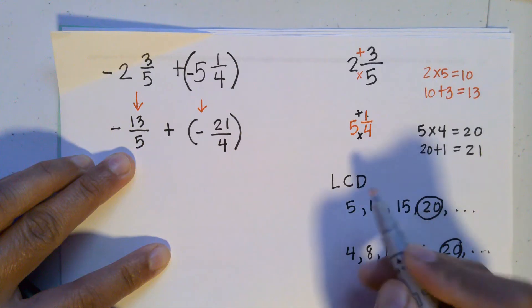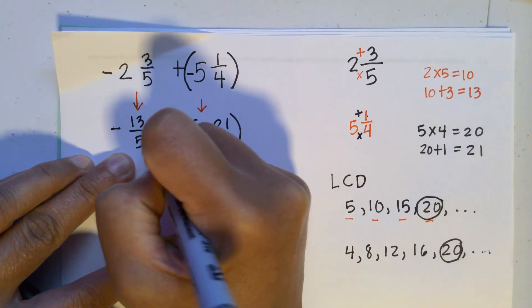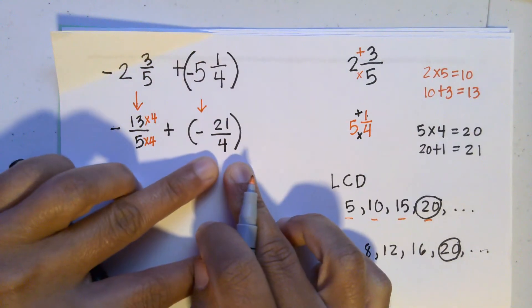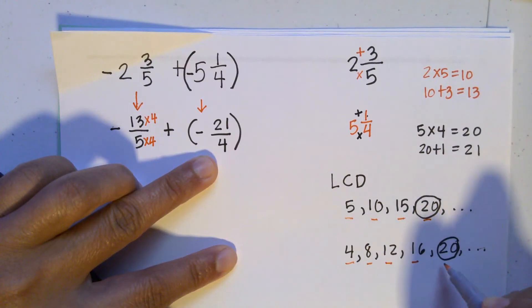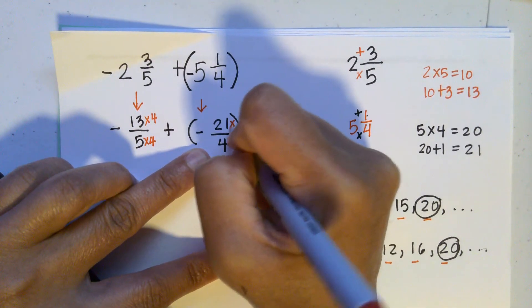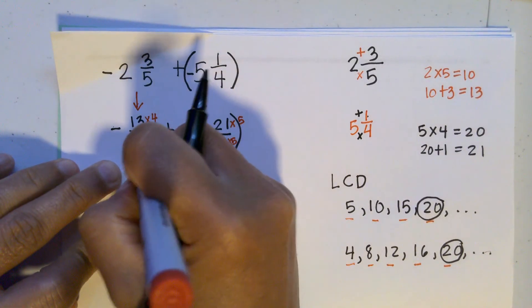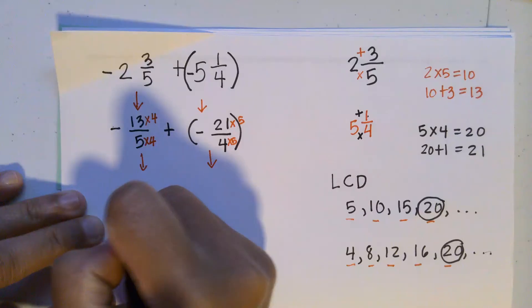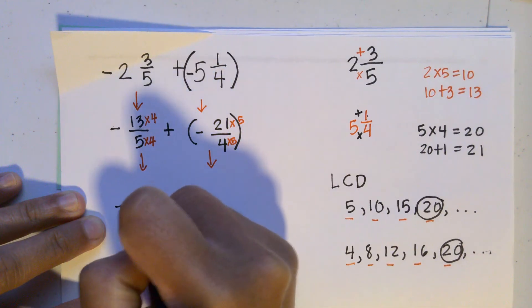For the denominator five, we multiply by four since you count by five four times to reach twenty — so we also multiply the numerator thirteen by four, giving fifty-two over twenty. For the denominator four, we multiply by five since you count by four five times to reach twenty — so the numerator twenty-one is also multiplied by five, giving one hundred five over twenty.